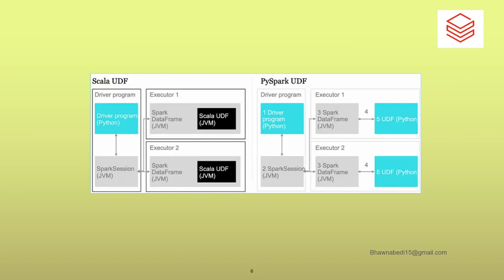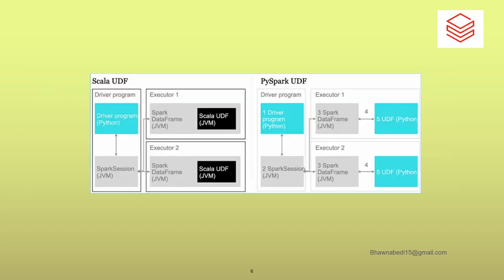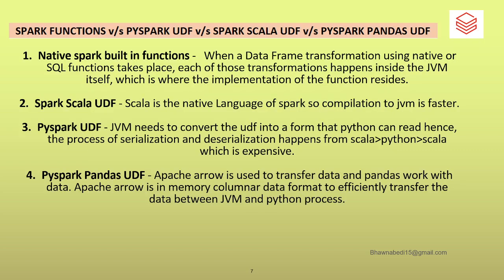Now let's compare all the options. You have four: first, native Spark inbuilt functions; second, PySpark UDFs; third, Scala UDFs; and fourth, Pandas UDFs. Native Spark built-in functions execute directly on the JVM, so there is no issue with performance there.